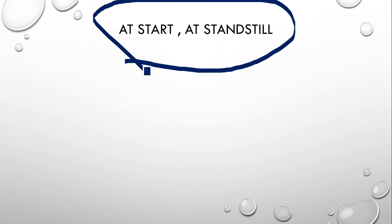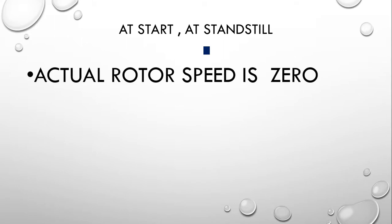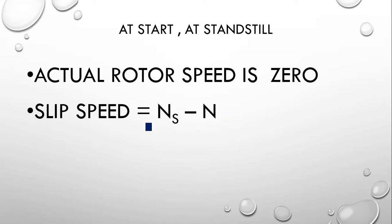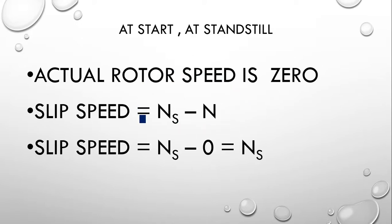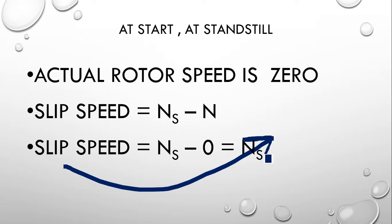At standstill, the motor is just given supply and has not started rotating. The actual rotor speed N is 0. So slip speed = N_s − 0 = N_s. At standstill, the slip speed equals the synchronous speed.